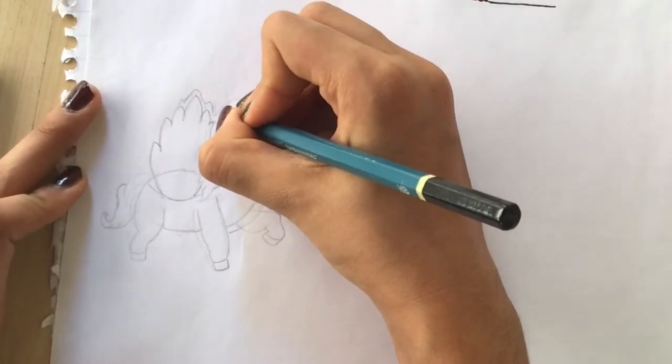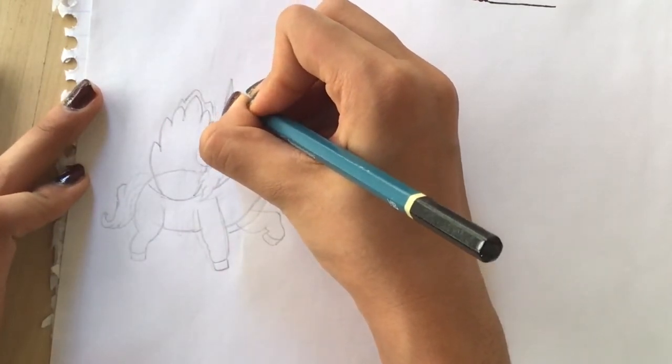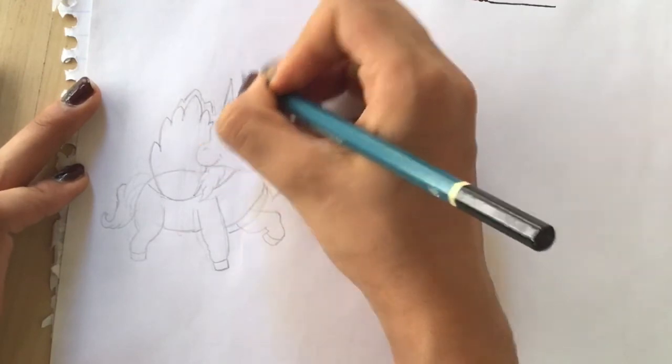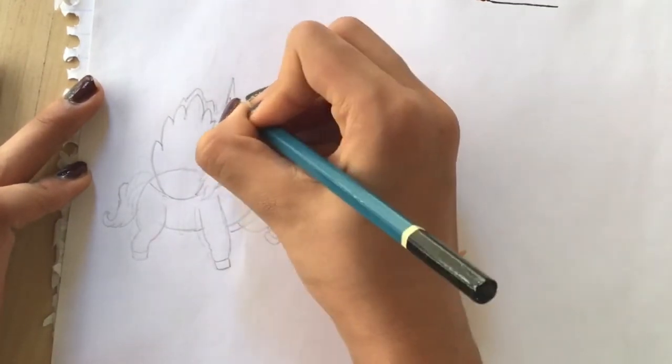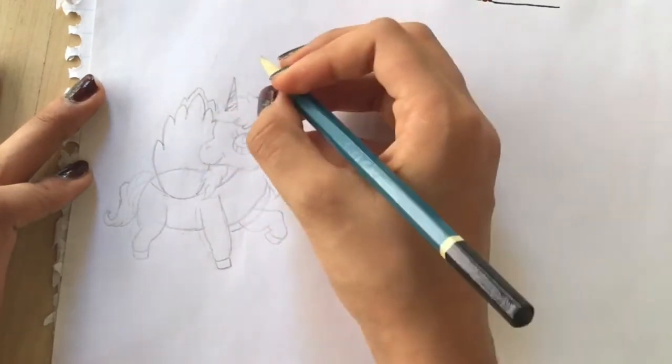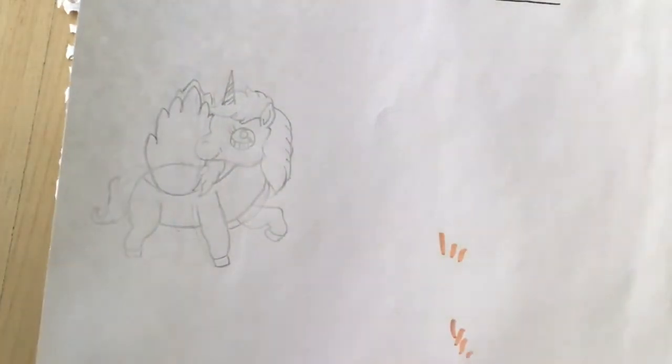The horn belongs up here. Draw the curved lines and now you're done. You can trace everything.